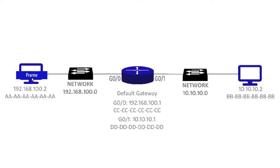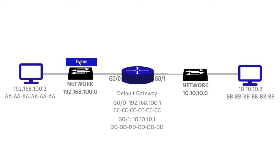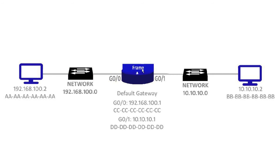The computer sends the frame out on the LAN, and it gets to the switch first. The switch takes the frame, looks at the header, and sees CC-CC-CC-CC-CC-CC as the destination MAC address. It looks in its CAM table — which has the MAC addresses of all devices connected to it and which ports they are on — and it knows exactly where the router is connected. So it sends the frame out to the port connected to that router. The frame makes it to the router, which analyzes the frame's MAC header, sees the destination is all C's, and knows this frame is for it.